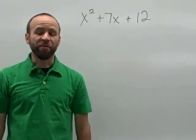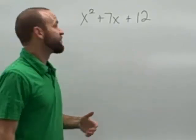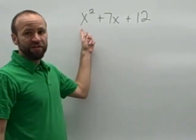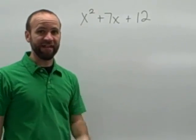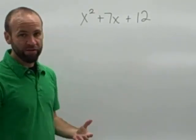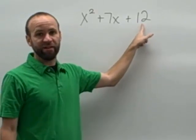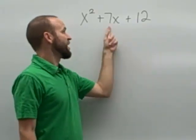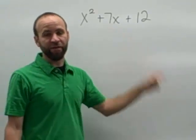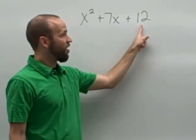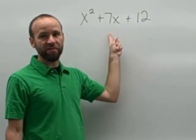Some polynomials are quite simple to factor. We'll start with a really simple example. If the leading coefficient of the trinomial is one, as in this example, all we really have to do is find a pair of numbers whose product is the constant term of the trinomial, and whose sum is the middle term of the trinomial. So what we're looking for here are factors of 12 whose sum is 7.